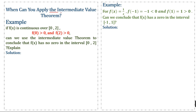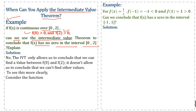When can you apply the Intermediate Value Theorem? Suppose f(x) is continuous over the interval [0, 2], and f(0) > 0 and f(2) > 0. Can we use the Intermediate Value Theorem to conclude that f(x) has no zero in the interval? The answer is no, because the Intermediate Value Theorem only allows us to conclude that we can find a value between f(0) and f(2).